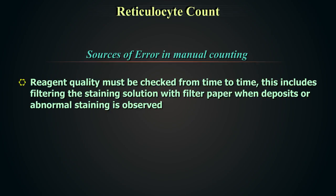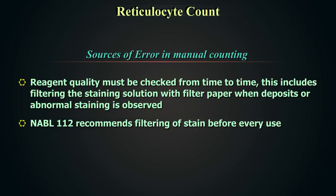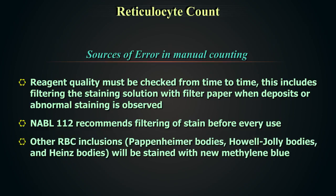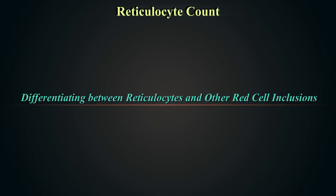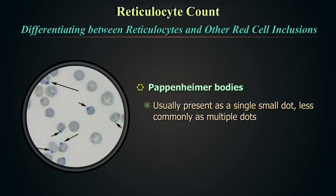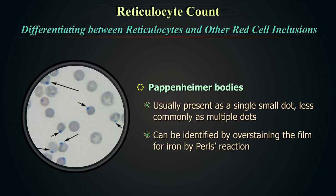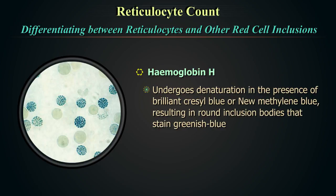Sources of error in manual reticulocyte counting include reagent quality, which must be checked regularly by filtering the stain solution when deposits or abnormal staining is observed. NABL112 recommends filtering the stain before each use. Other RBC inclusions such as Pappenheimer bodies, Howell-Jolly bodies, and Heinz bodies are also stained by new methylene blue. Pappenheimer bodies usually present as a single small dot or multiple dots, staining a darker shade of blue than reticulofilamentous material, and can be identified by iron staining with Perl's stain.